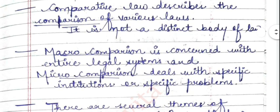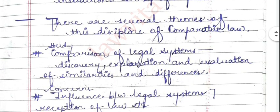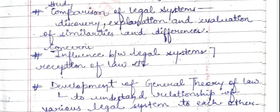There are several themes of the discipline of comparative law. When we understand and research comparative law there are several themes we cover. First is the study and comparison of legal systems — discovery, explanation, and evaluation of similarities and differences. The different concepts that we are studying, we discover, explain, and evaluate what the similarities and differences are.